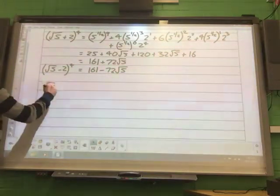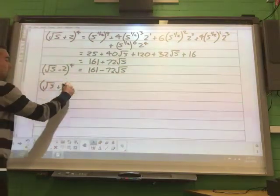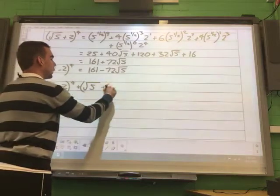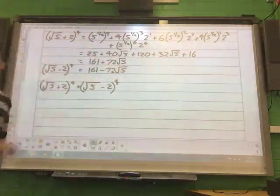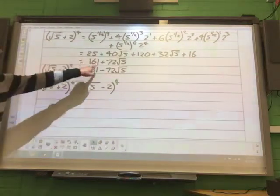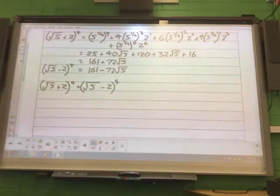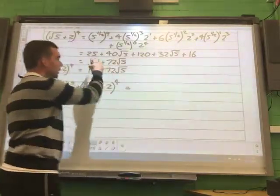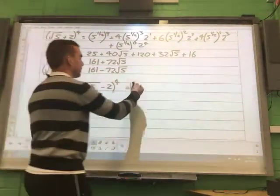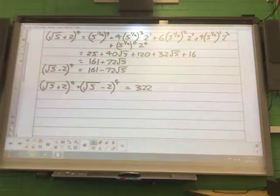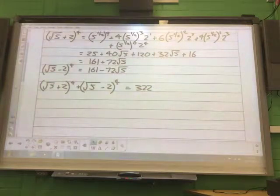So therefore, root 5 plus 2 all to power of 4, plus root 5 take away 2 all to power of 4. That's the question. What it asked us to do. Which is that plus that? Which is going to be 2 lots of 161. Sorry, 322. So it worked out to be the exact value for us.